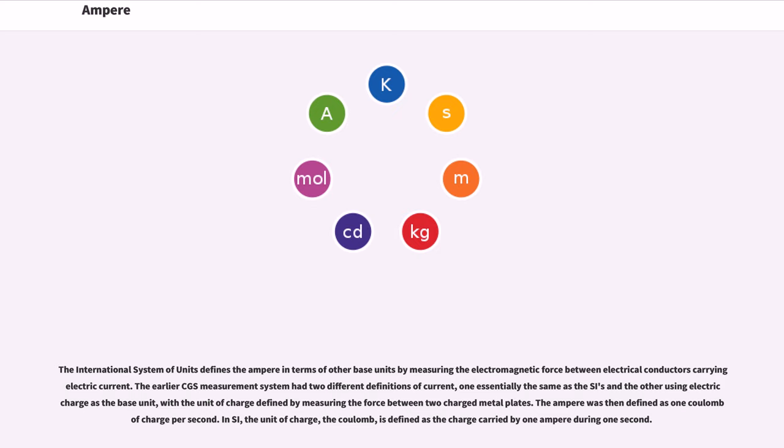The ampere was then defined as one coulomb of charge per second. In SI, the unit of charge, the coulomb, is defined as the charge carried by one ampere during one second.